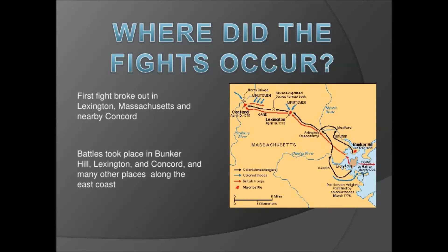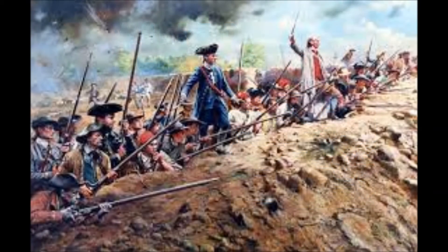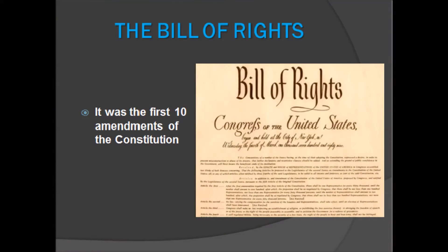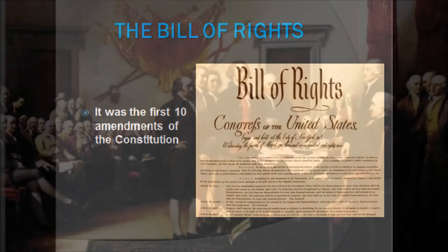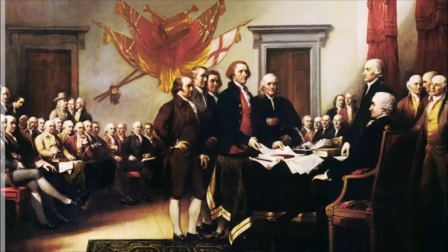Significant fights during the revolution included the skirmish at Lexington and Concord in 1775, which acted as a turning point for the revolution. The Declaration of Independence acted as an announcement by the Americans that they were rejecting British rule and establishing their own state.